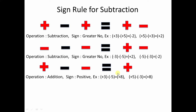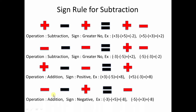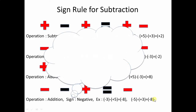The last case: a negative number minus a positive number always gives a negative result. The operation is addition and the sign is always negative. For example, minus 3 minus plus 5: minus times plus is minus, so minus 3 minus 5 — adding 3 and 5 gives 8 and the sign is negative. Similarly, minus 5 minus plus 3 gives minus 8.